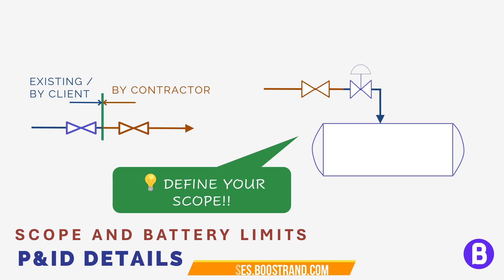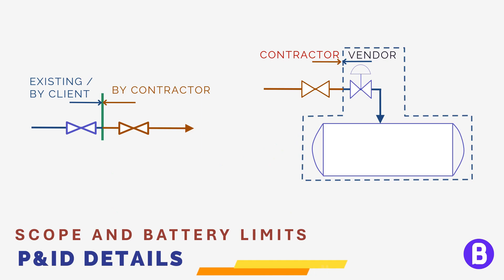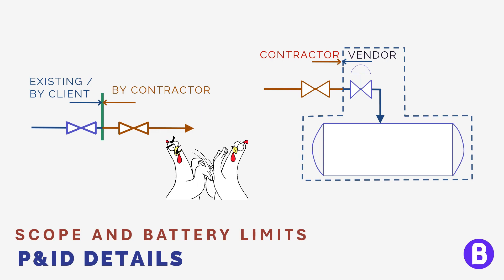We are expected to define what we want the package vendor to provide and what we shall purchase ourselves. We shall draw a dashed box — what's inside this box, shown in blue, shall be provided by the vendor, and we shall provide the valve and interconnecting piping in red, which is outside the box. If these are not defined well, many conflicts may occur between different parties, and people shall start to throw responsibilities on each other, leading to many issues during project execution.